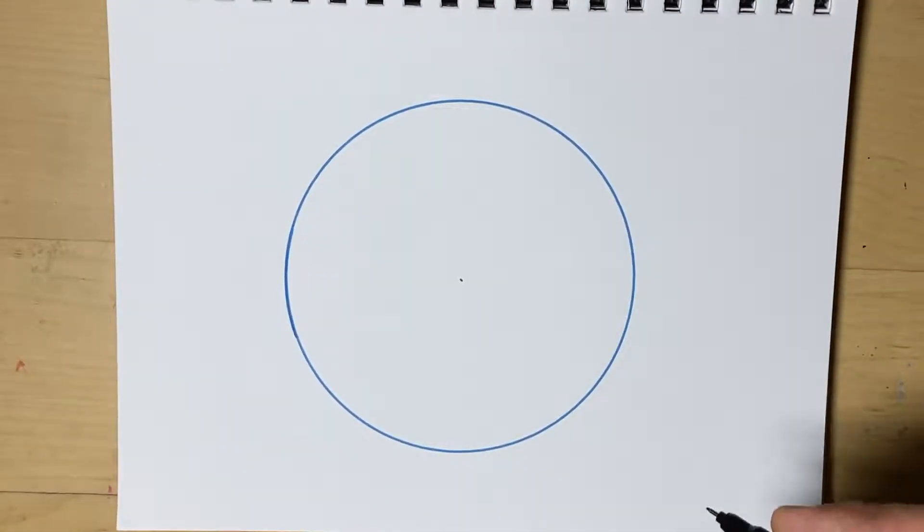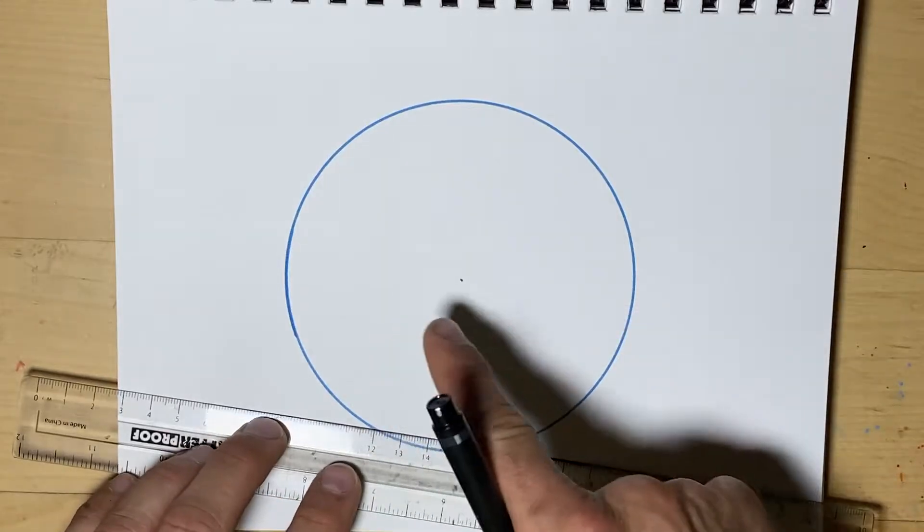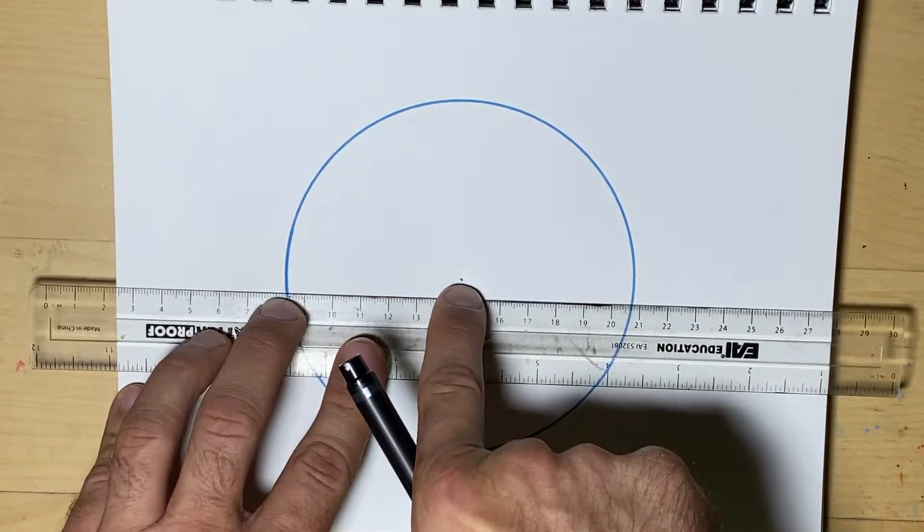The first thing we'll do, to cut the circle in half or make a semi-circle, we simply need to draw a line that goes through the center.